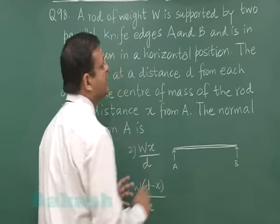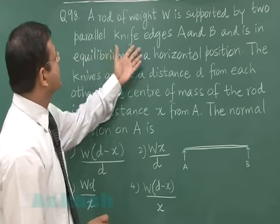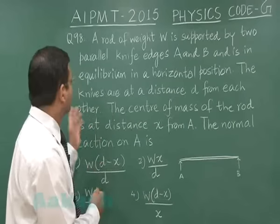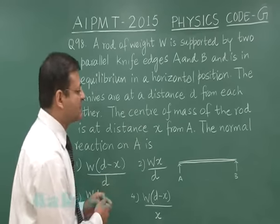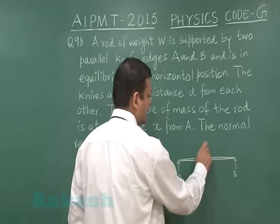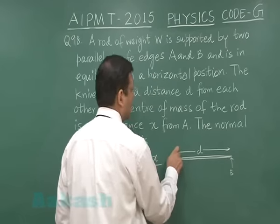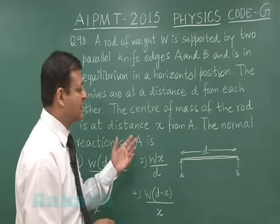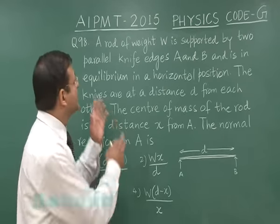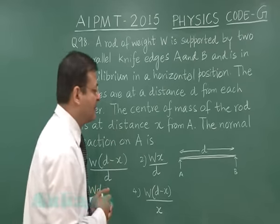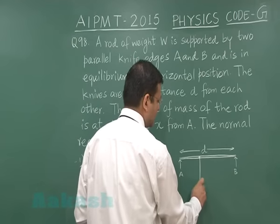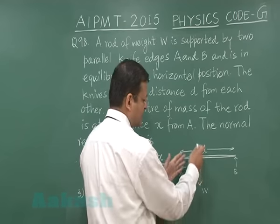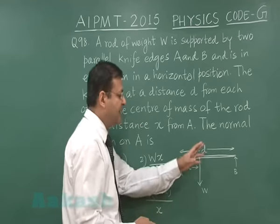The distance between A and B has been given to you. Here it is writing knife edges A and B and is in equilibrium in a horizontal position. Now the knives are at a distance D from each other. The distance between them that has been given to be D. The center of mass of the rod is at a distance X from A. Now center of mass is the location from which the entire weight of this body will be going down. So let us suppose I am writing W here. So this is at a distance X from A. Now if you look at the distance of W from B that will be D minus X.